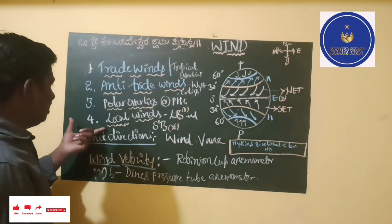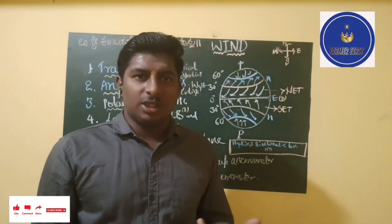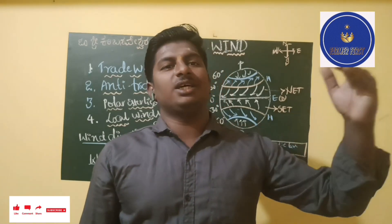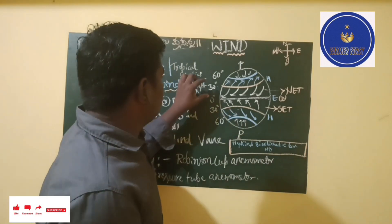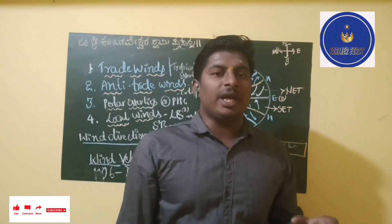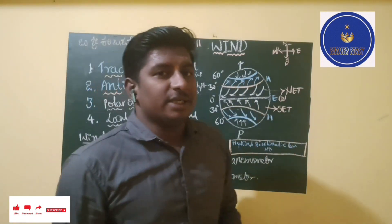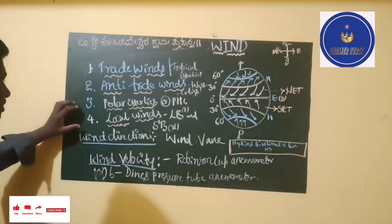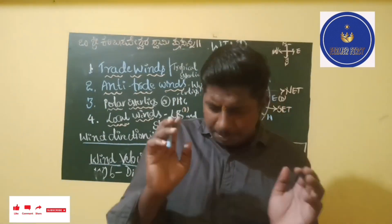The next type of wind is polar easterlies. They are called polar easterlies because the wind generates from the polar region and moves towards the lower pressure belts at the horse latitudes. That is why they are called polar easterlies.